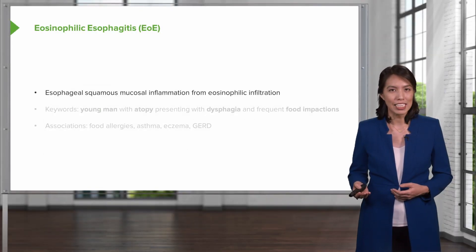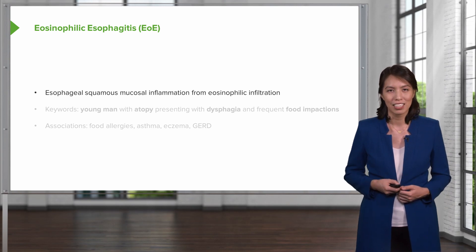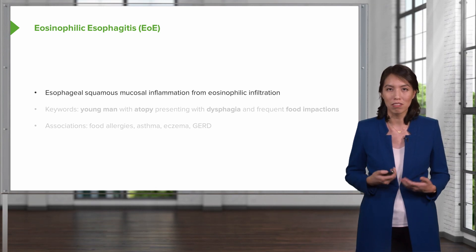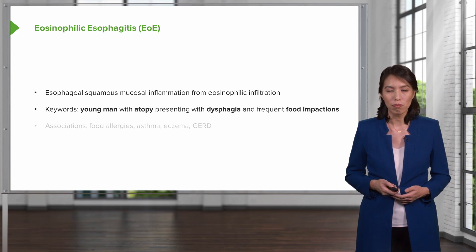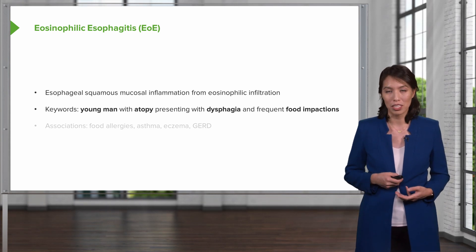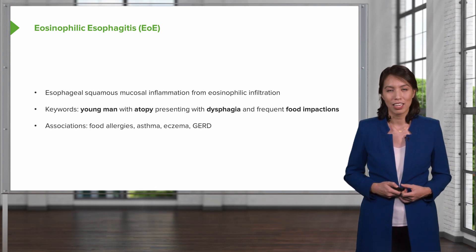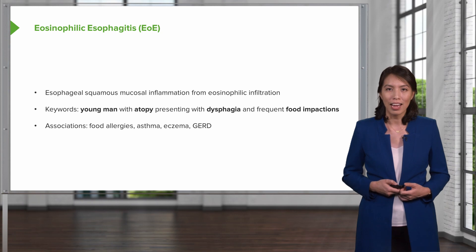The third type of esophagitis is eosinophilic esophagitis. This is a rare condition, but it is commonly tested. It is an esophageal squamous mucosal inflammation that results from eosinophils infiltrating the esophageal tissue. Key words for test-taking purposes are: a young man with atopy who presents with dysphagia and frequent food impactions. It tends to be associated with food allergies, asthma, eczema, and GERD.